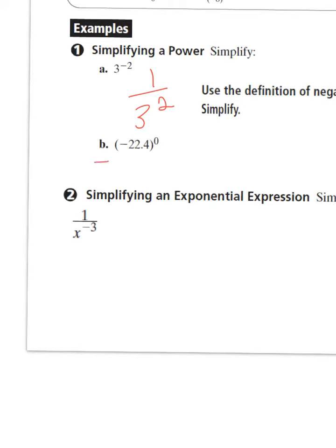In example B, we have negative 22.4 to the 0 power. Because that's in parentheses, everything in that parentheses is taken to the 0 power, that is going to give us 1.